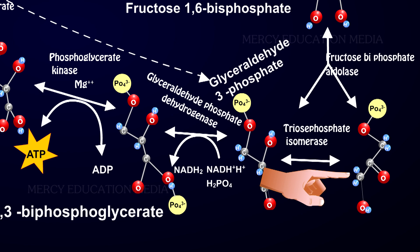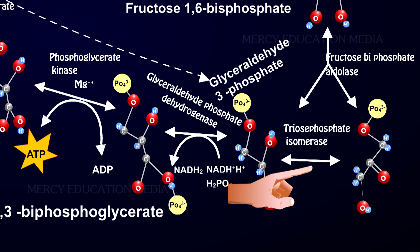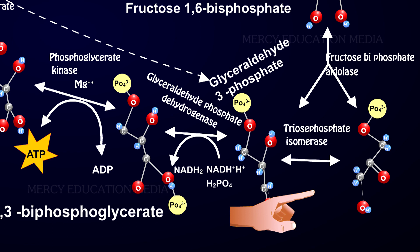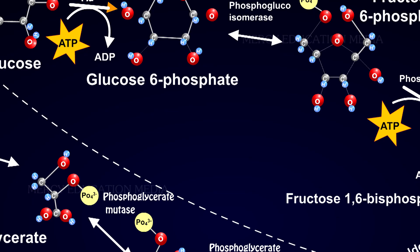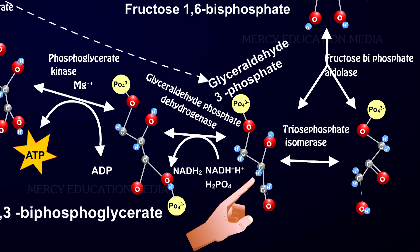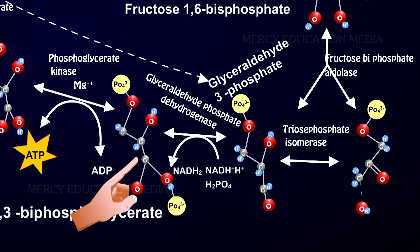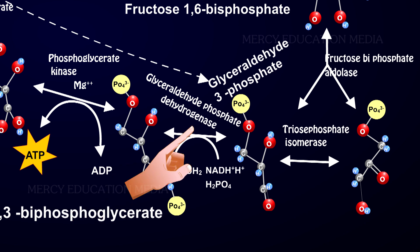DHAP and glyceraldehyde-3-phosphate are interconvertible by the action of triosephosphate isomerase. These 5 series of reactions constitute the hexose phase and produce 2 molecules of the 3C compound called 3-phosphoglyceraldehyde. In the hexose phase, 2 ATP molecules are consumed.